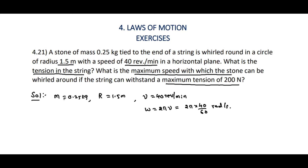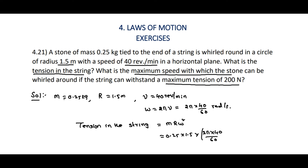The tension in the string equals m·r·ω². That is 0.25 × 1.5 × (2π × 40/60)². After simplification, we get 6.6 newton. This is the tension in the string.